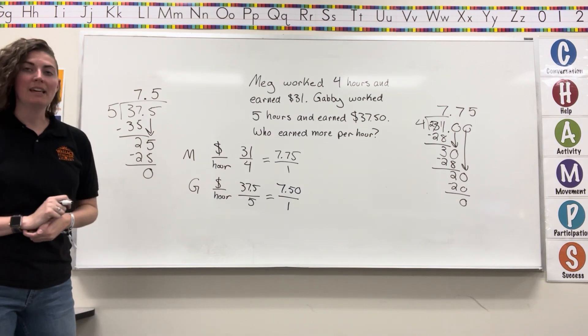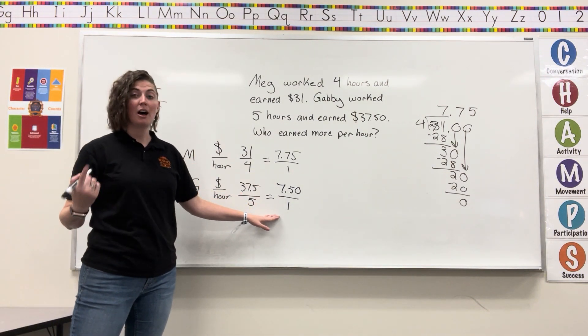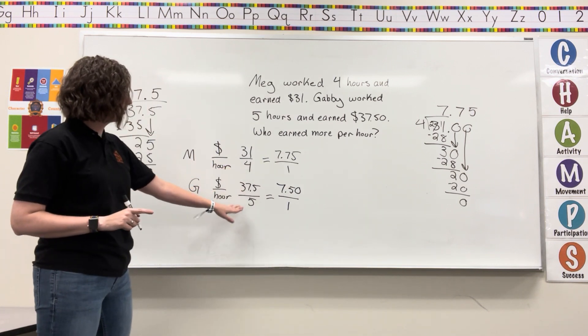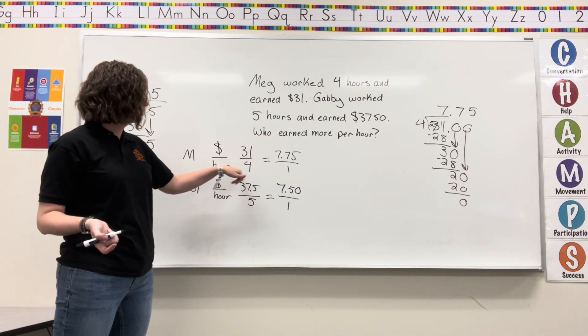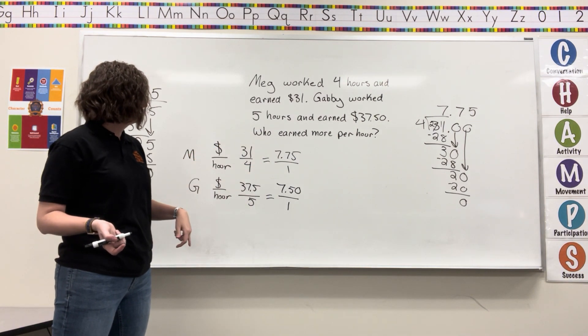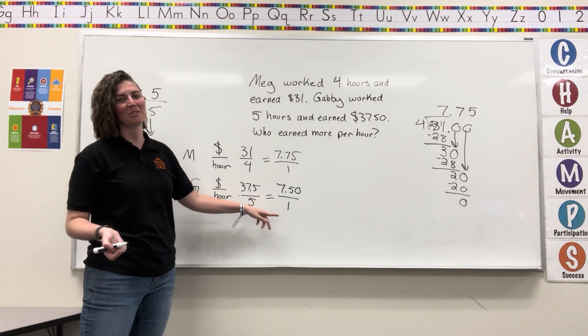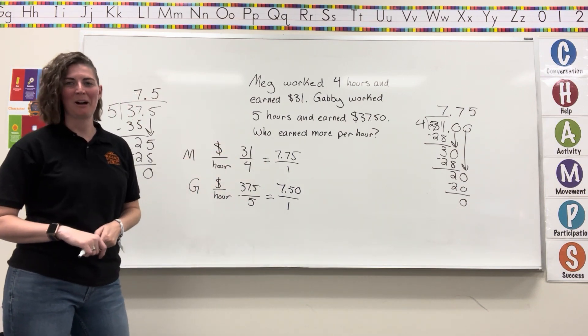Now we can say who earned more per hour because both of these girls' amounts are being compared to one hour instead of four or five. Clearly Meg earned more per hour. She worked less and only earned, I guess it pays off to work a little longer. It's only 25 cent difference. They'll be okay. But Meg earned more per hour.